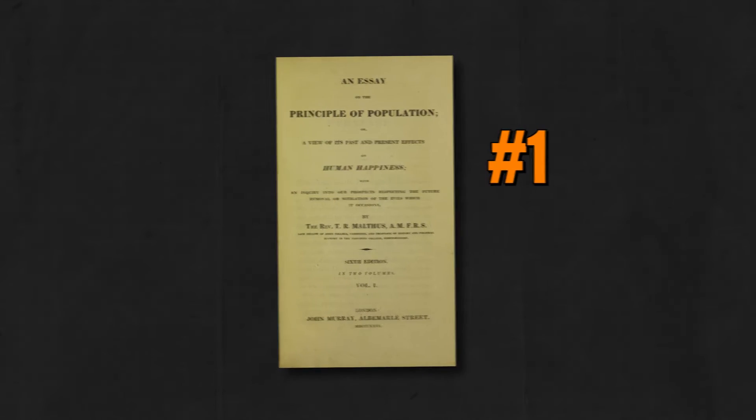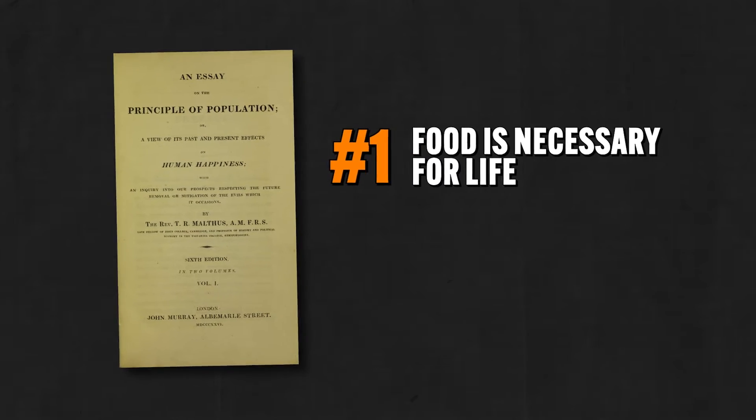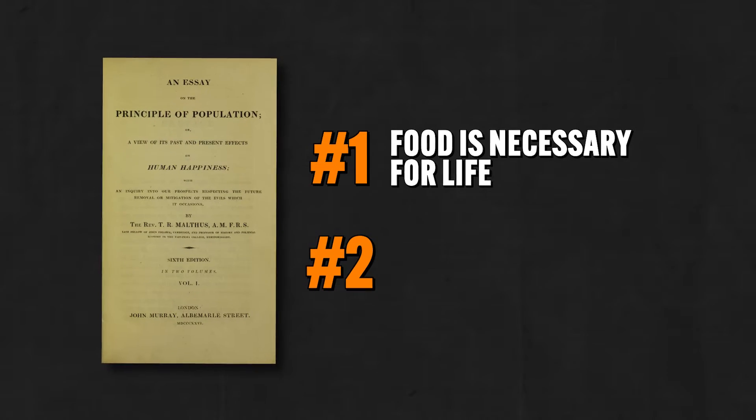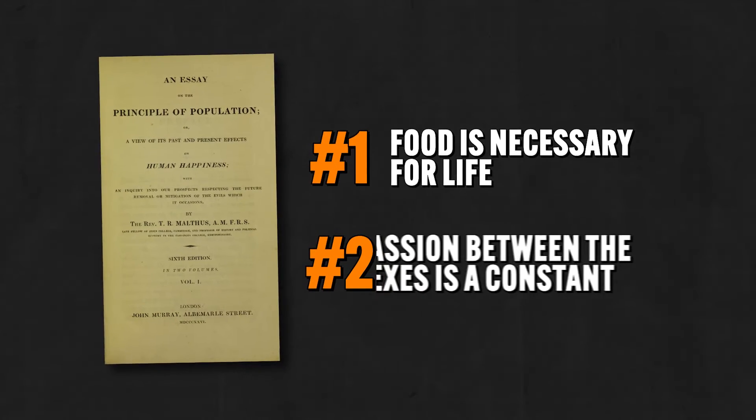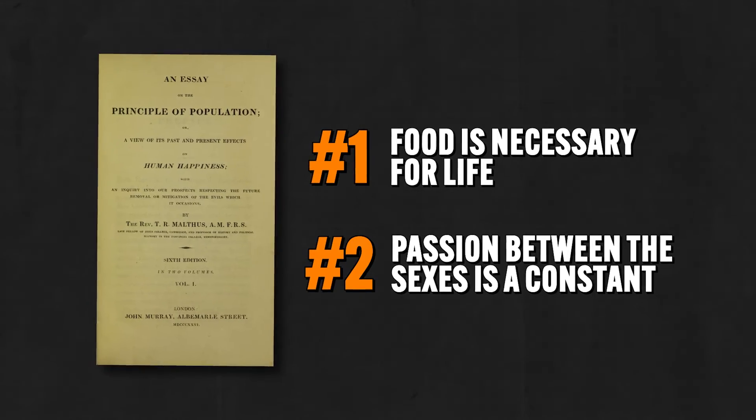First, he noted that food was necessary for life — okay, so far I'm with you. Second, he said that the passion between the sexes is a constant, by which he meant, well, you know what he meant. So, two laws of human society: we have to eat to live, and due to our passion, we just keep on multiplying. And really, I don't think anybody could argue with those two points.